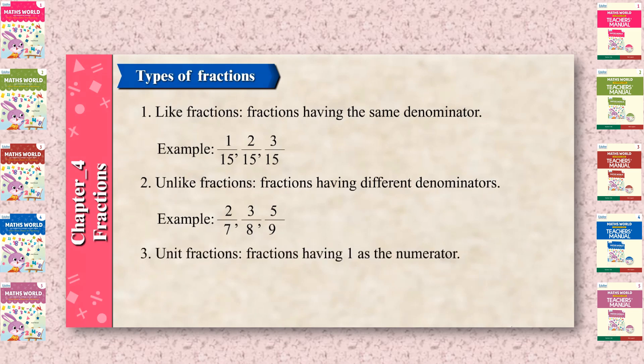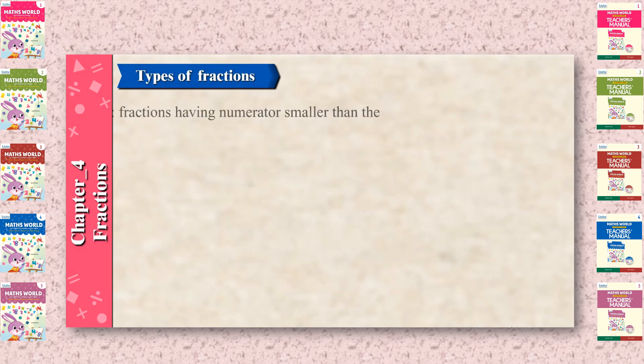Unit fractions: fractions having 1 as a numerator. Example: 1 upon 5, 1 upon 8, 1 upon 10.